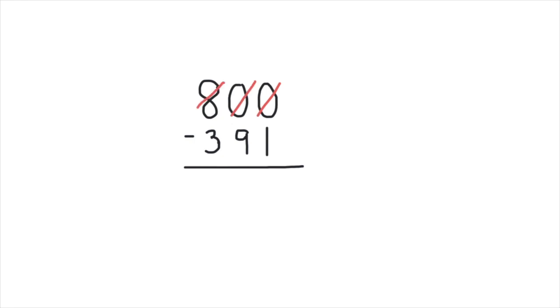We're taking 1 away so our 8 becomes a 7, and then we're adding 10 to our 0 to make it 10. Now we have something to give to our ones place.